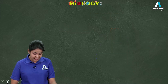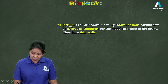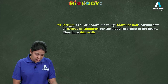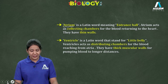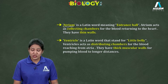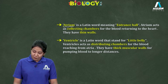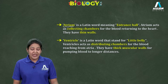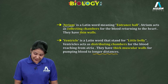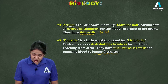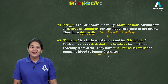The word 'atrium' is Latin for 'entrance hall' — the atria act as collecting chambers for blood returning to the heart and have thin walls. The word 'ventricle' is Latin for 'little belly' — the ventricles act as distributing channels for blood coming from the atria, and have thick muscular walls for pumping blood to longer distances, while atria only need to pump to adjacent chambers.